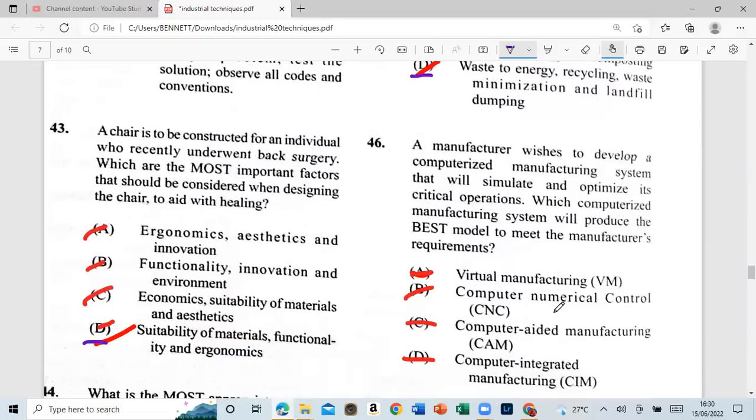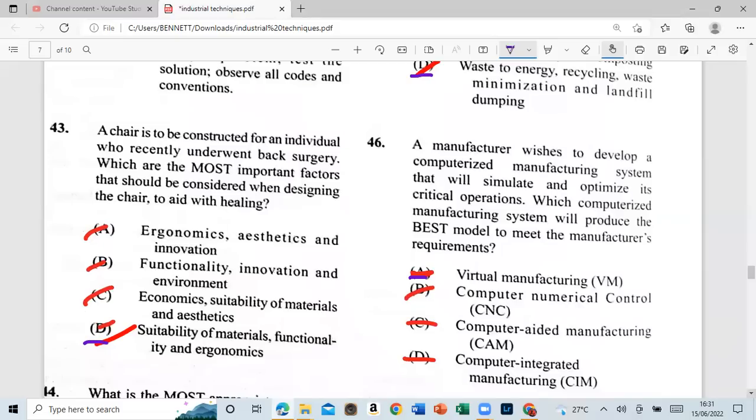A manufacturer wishes to develop a computerized manufacturing system that will simulate and optimize its critical operations. Which computerized manufacturing system will produce the best model to meet the manufacturer's requirement? A: virtual manufacturing, or the VM. B: computer numerical control, or the CNC. C: computer-aided manufacturing, and the CAM are the computer integrated manufacturing, which is the CIM. What is it, guys? And that's the VM, virtual manufacturing. So that's A. Let's move on to 47.